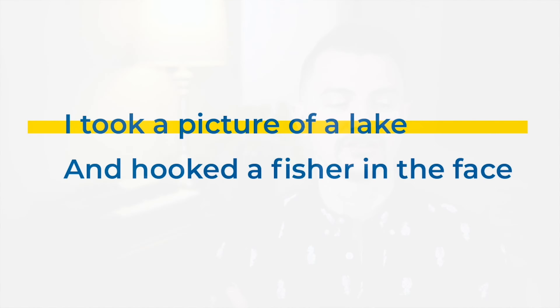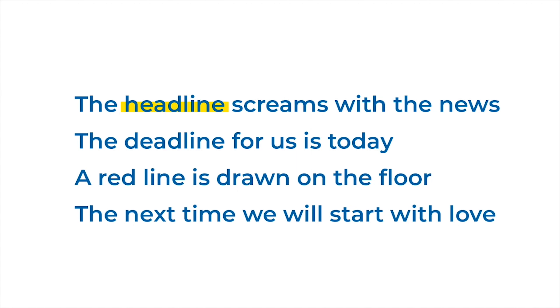A complex rhyme is a rhyme that exists across several syllables, where you can take two different phrases and rhyme them together. Here's what I mean: 'I took a picture of a lake and hooked a fisher in the face.' You see, there are multiple places that rhymes are taking place within these two phrases. These can be a little bit more tricky to construct, but well worth the effort. Most rhymes come at the end of the phrase — these are called end rhymes. But you can also put a rhyme in the middle of the phrase, and that's called an internal rhyme. 'The headline screams with the news. The deadline for us is today. A red line is drawn on the floor. The next time we will start with love.'